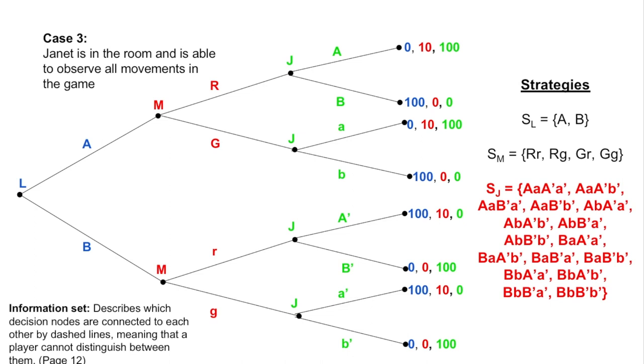And the last one is the case where Janet is in the room the whole time and is able to observe all movement in the game. So Janet has four sets of information. One, two, three, and four. And the strategies will have four letters. Each letter will capture the decision at every single decision note. And the combination of strategies are sixteen strategies that will account for every single possible decision Janet has to do all along the game.